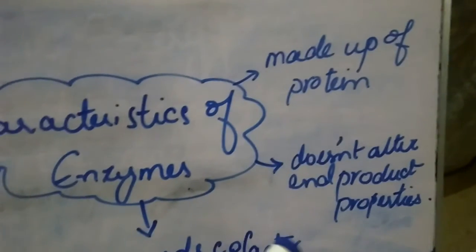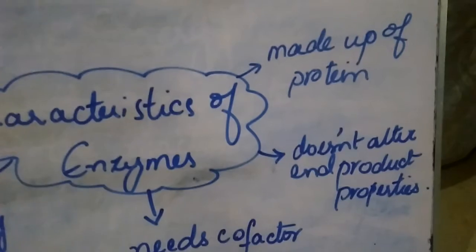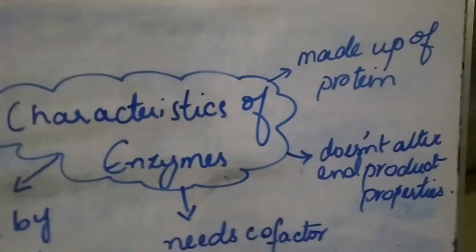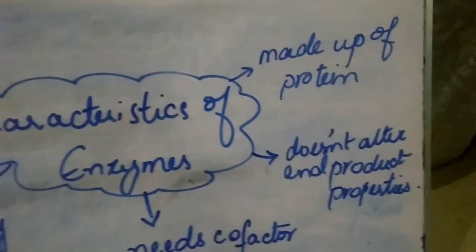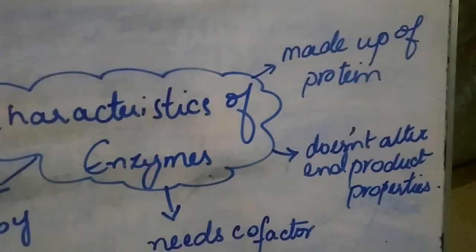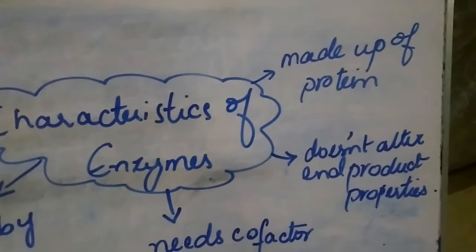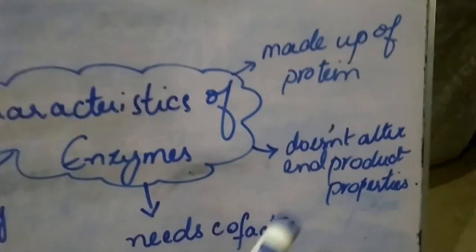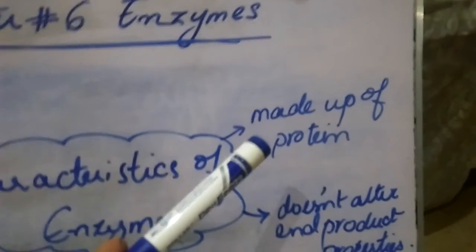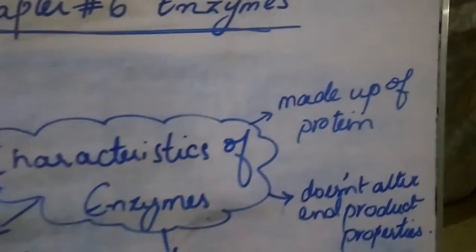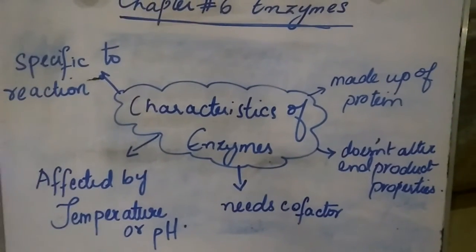Number four: enzymes do not alter the end product properties. When involved in a reaction, they speed up and facilitate the reaction, but they do not take part in it — they do not react with the reactants — and that is why they do not alter or change the properties or nature of the product. Additionally, enzymes are made up of protein. So these were the characteristics of enzymes.